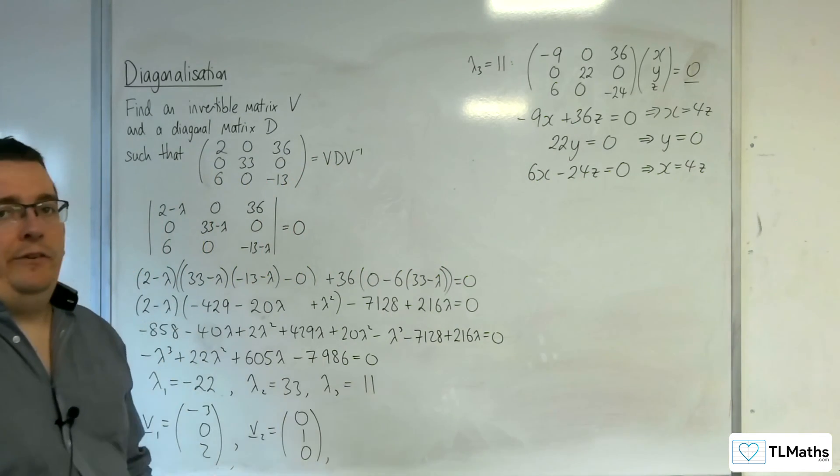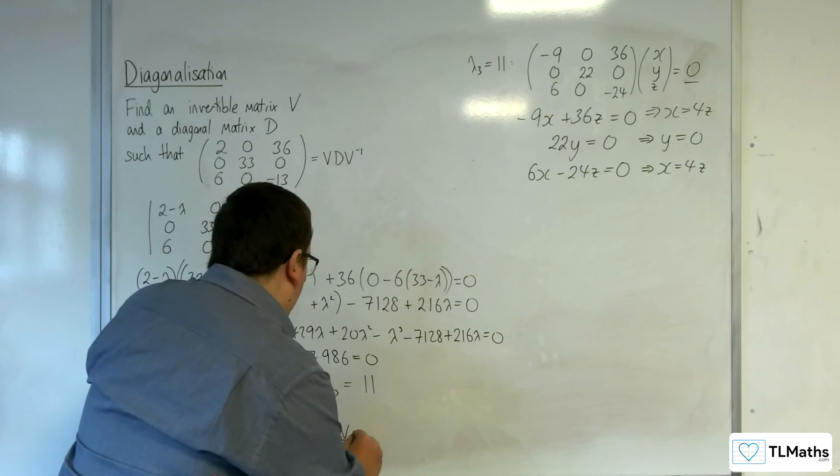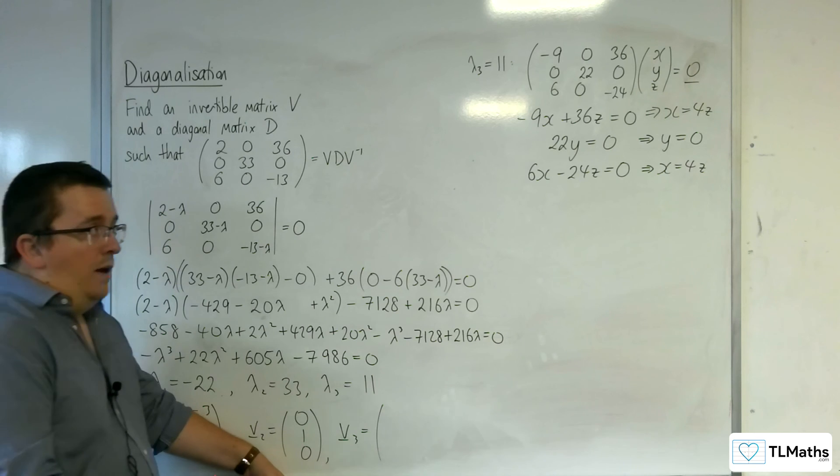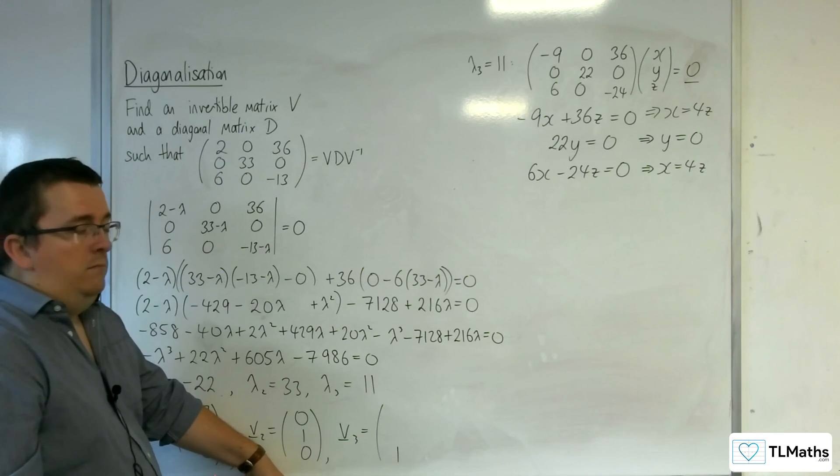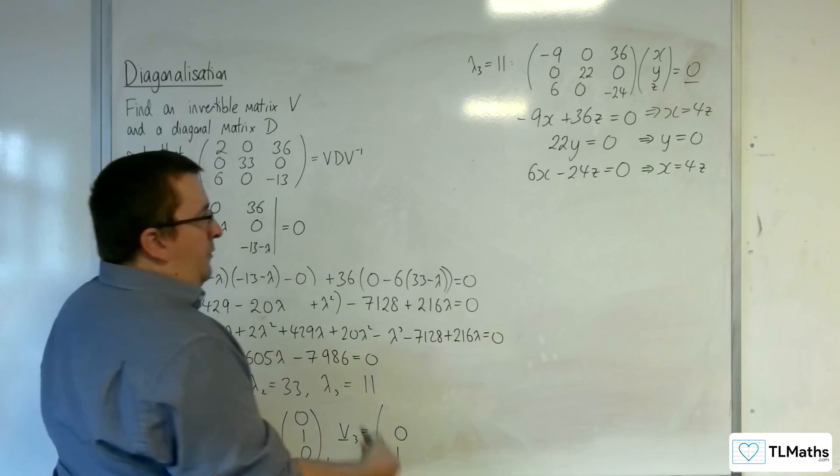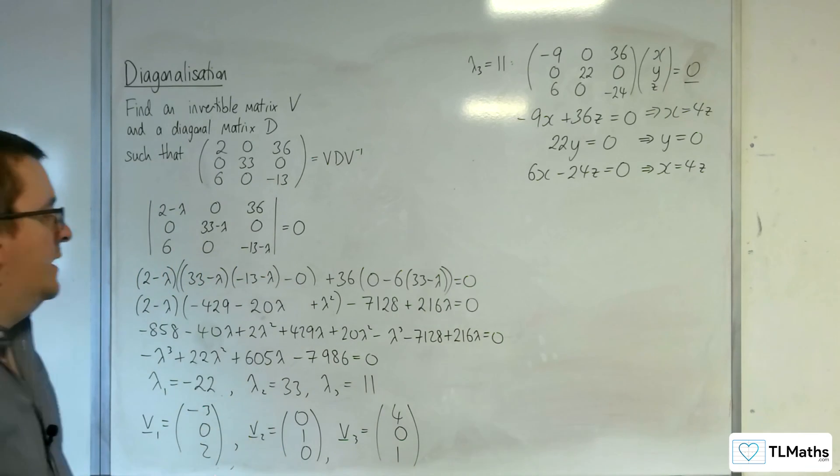So if you let z be t, then v3, if t is 1, then z is 1, y is 0, and x is 4 lots of 1. So 4, 0, 1 is your eigenvector.